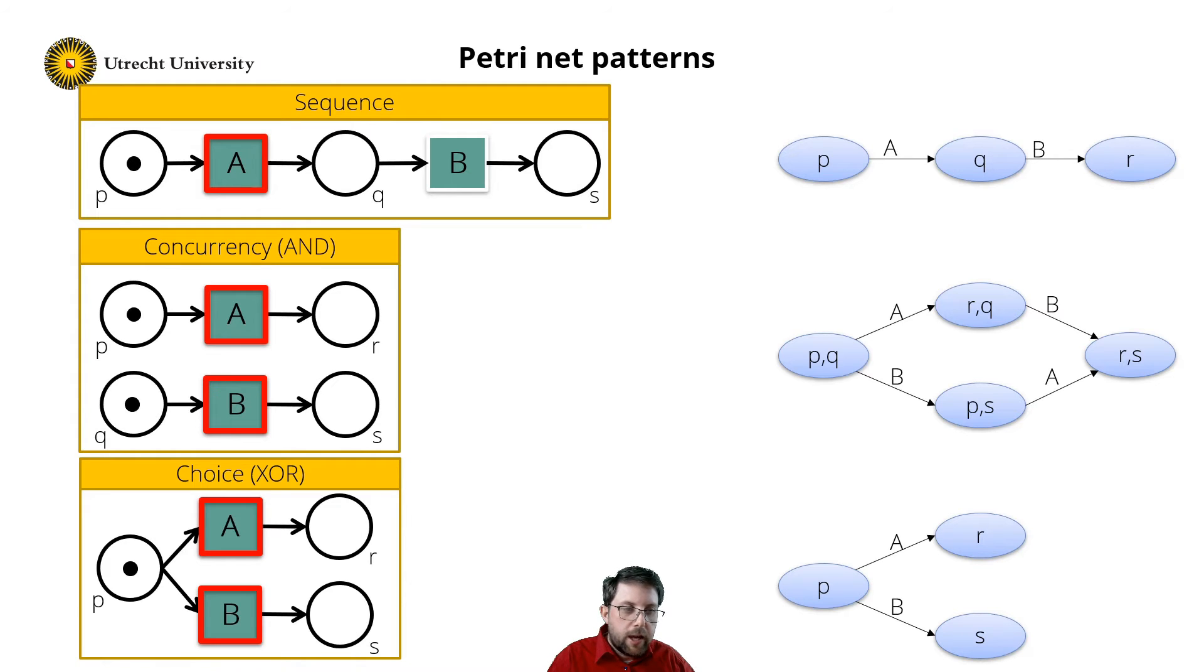Hence, if transition A fired, the precondition for transition B is removed, and thus it is not enabled anymore. And vice versa, firing transition B hampers transition A.